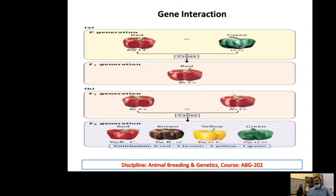Their ratios are 9:3:3:1. So 9 are red, 3 are brown, 3 are yellow, and 1 is green. The genotype is given underneath them.